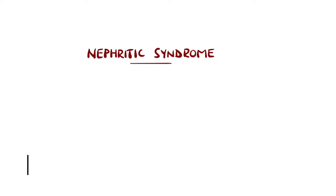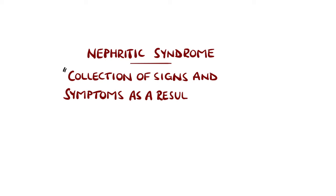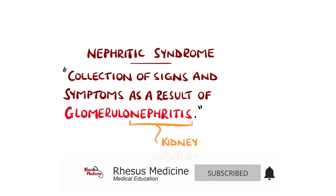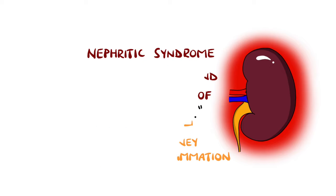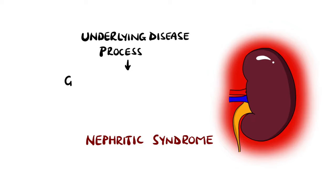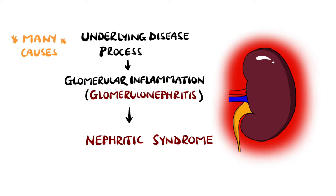Nephritic syndrome is a collection of signs and symptoms that result from glomerulonephritis, which is inflammation of the kidney, specifically the glomerulus. This can be remembered because 'itis' means inflammation. Rather than being a disease itself, nephritic syndrome is the manifestation of an underlying disease that causes the inflammation, and there are many of these causes.